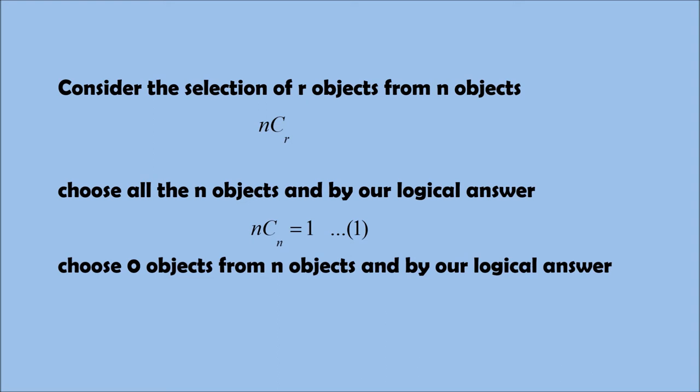Similarly, choose 0 objects from the given n objects. Again, by the logical answer, we can get nC0 is equal to 1 because we have to choose 0 objects. 0 objects means don't choose any objects. Don't choose any objects in the sense, don't do anything. If you think logically, don't do anything is one of the choices. So nC0 is equal to 1. There is only one choice for not doing anything.